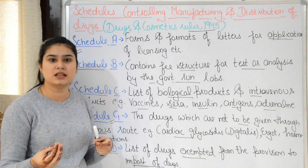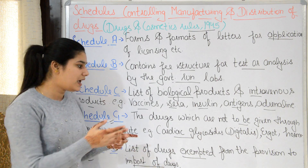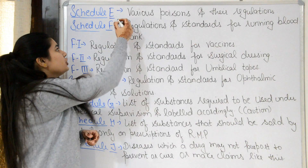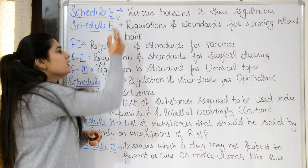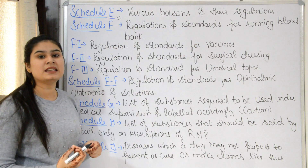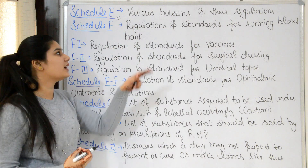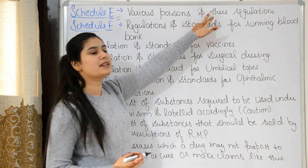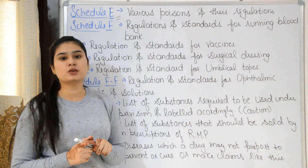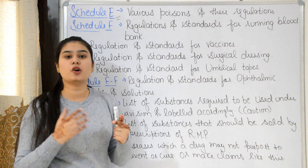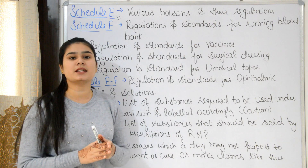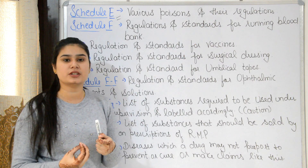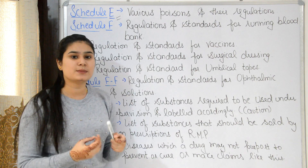Vitamins and minerals imported in bulk are also in Schedule D. Basically these are not for direct medicinal use as medicines — they are imported in bulk. Next, Schedule E contains poisons and their regulations — poisons-related rules and regulations come under Schedule E.